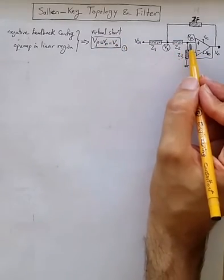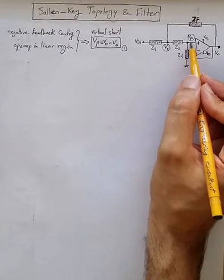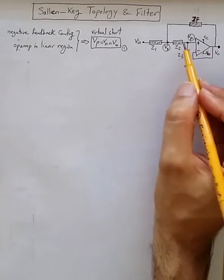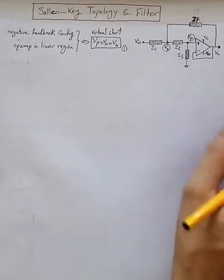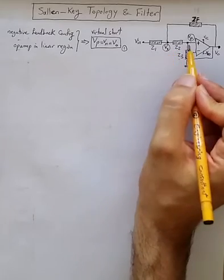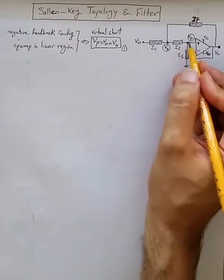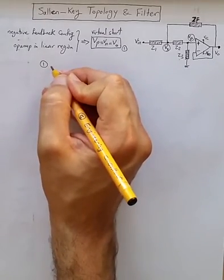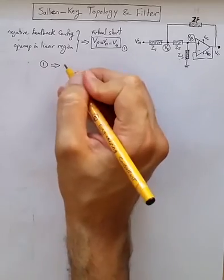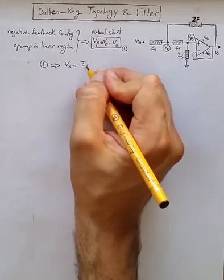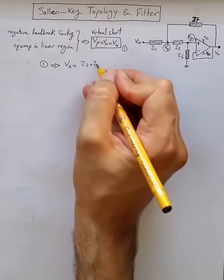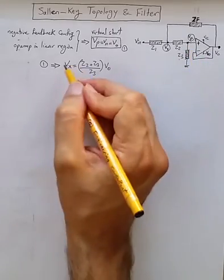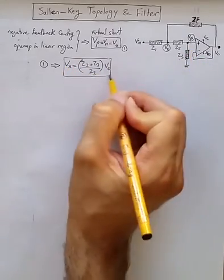Now, since no current is flowing into or coming out of the input terminals of the op-amp because of input impedance being very high, practically speaking, we can say the relationship between Vx and Vp is just a voltage divider. And since Vp from equation 1 is equal to Vout, we can say Vx is just Z2 plus Z3 divided by Z3 times Vout, or Vp. So that is equation 2.